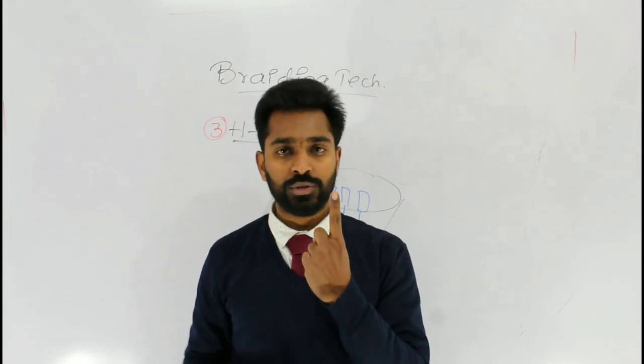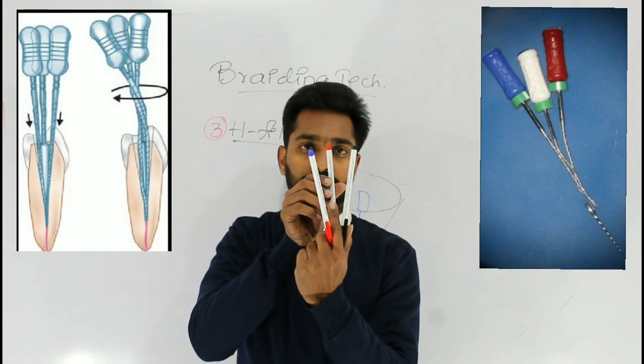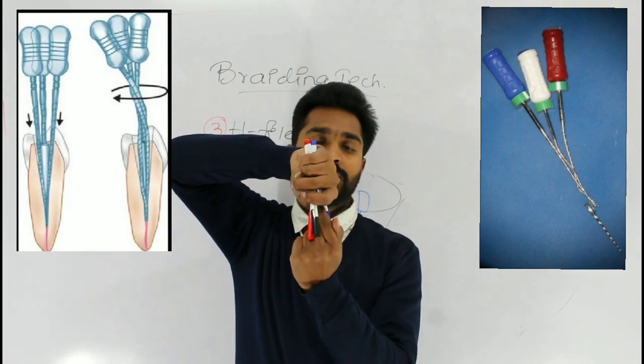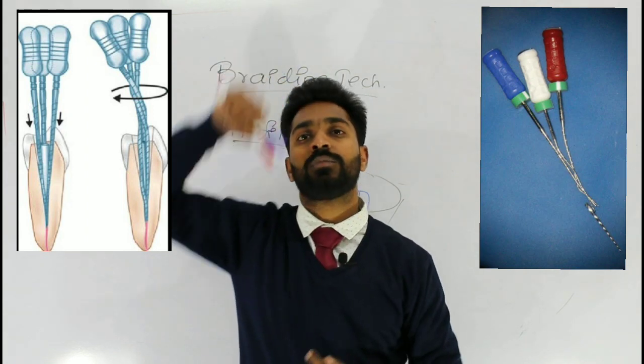Suppose this is the separated instrument. Place the H-file surrounding the separated instrument in all three directions. And try to twist the H-files in clockwise direction and try to pull it out from the canal orifices.